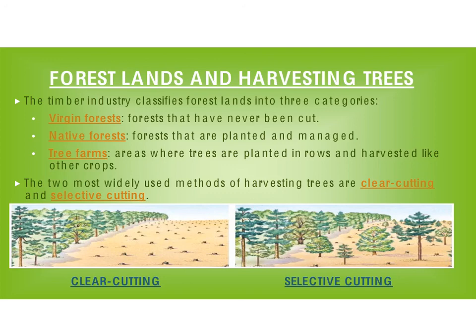As we harvest or cut down trees, we have to look at the types of forests. There are three types. There are virgin forests, which are forests that have never been cut at all — people have not been in there to cut down the trees. There are native forests, which are forests that are planted and managed to provide lumber and wood products over a long period of time. And then there are tree farms — you see this a lot around Christmas time if you go and cut down your own Christmas tree. The trees are planted in rows and we just harvest them, cut them down like we would other crops, like wheat or barley.